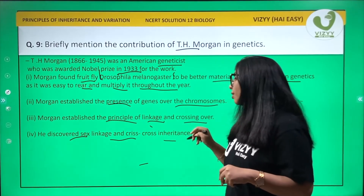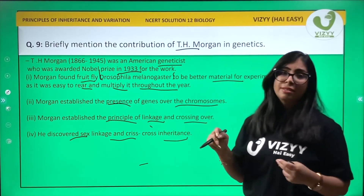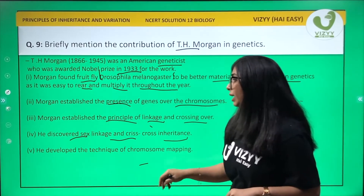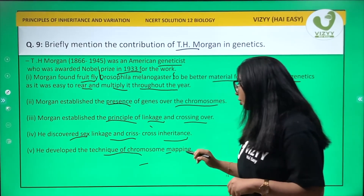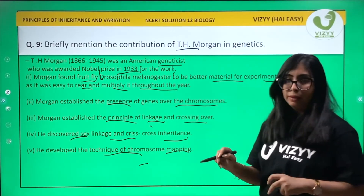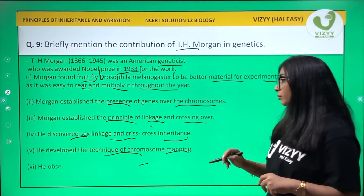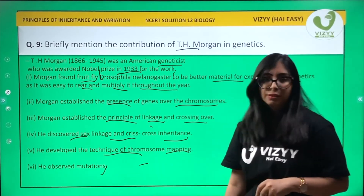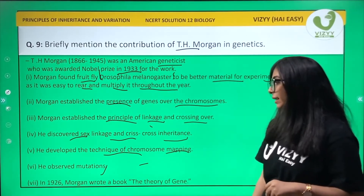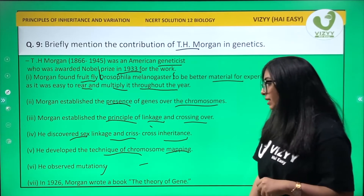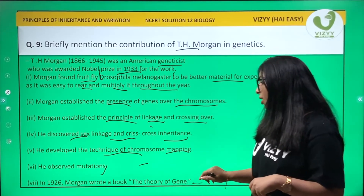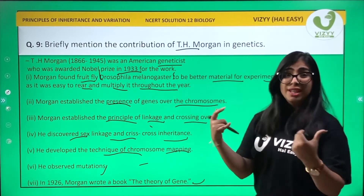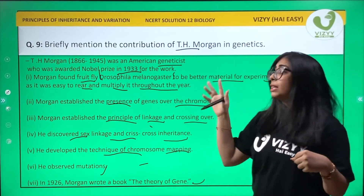Fourth, he discovered that sex linkage and criss-cross inheritance are present. Fifth, he developed a technique of chromosome mapping and observed mutations. Lastly, in 1926, he wrote a book called 'Theory of the Gene,' as he was a geneticist whose entire work was on genetics.